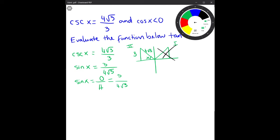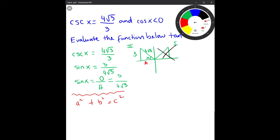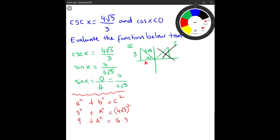Since we already know the hypotenuse and the opposite side, we use the Pythagorean theorem to find the adjacent side. The Pythagorean theorem is a² + b² = c². So we have 3² plus the adjacent side squared equals (4√3)². That gives us 9 plus the adjacent squared equals 16 times 3, which is 48.